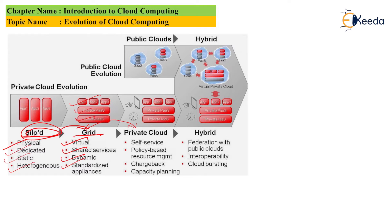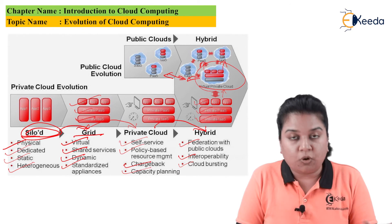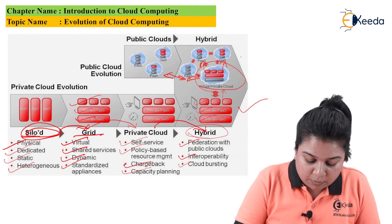After grid computing, they moved to cloud services. From grid, they evolved to the private cloud, which has self-service, policy-based resource management, chargeback, and capacity planning. Then from private cloud, they evolved to the hybrid cloud. Hybrid cloud has federation with public clouds, interoperability, and cloud bursting. In hybrid cloud, companies have their own private infrastructure as a service, private platform as a service, and software as a service, which interact with the virtual private cloud. This virtual private cloud interacts with the public cloud, which has its own software as a service, platform as a service, and infrastructure as a service. In other words, hybrid cloud is the combination of private cloud and public cloud.